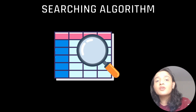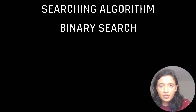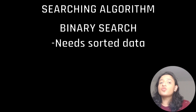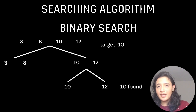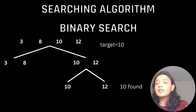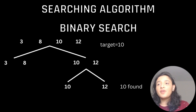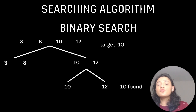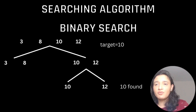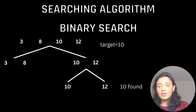The first searching algorithm is binary search — the most efficient searching algorithm, provided the data is sorted. Given sorted data 3, 8, 10, and 12, and a target value of 10, binary search divides the array into two halves and asks where the target could be. It finds the target in the second half (10 and 12), then finds 10 directly. In just two steps, the target is found.